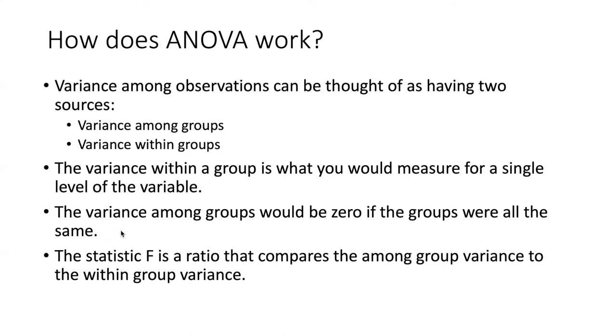The variance among the groups would be zero if all the groups were the same. If the average response to red and the average response to blue and the average response to green all had the same means, then the variance among groups would be zero. So if those groups behave differently, then the variance among groups would be greater than zero.